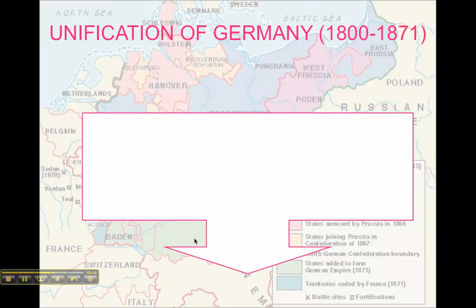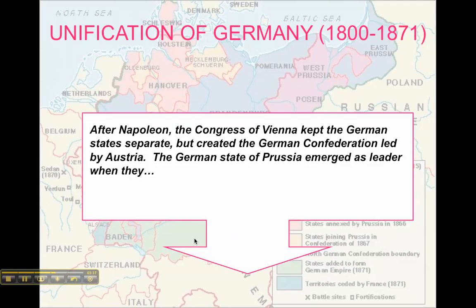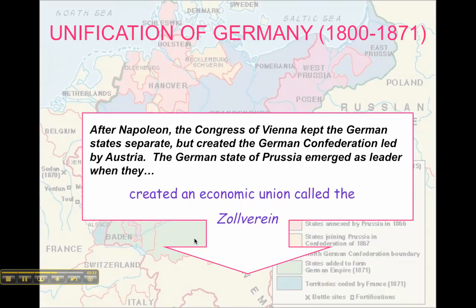The next beginning of German unification, aside from the German Confederation, is Prussia taking a leadership role by instituting an economic union called the Zollverein. The 39 separate states each had their own tariffs, customs, and tolls as people traveled and traded. The German Confederation had been managed under the umbrella of Austrian rule, but Prussia takes that leadership away by creating an economic union where instead of German states competing with each other, they combine forces and trade with the outside world.